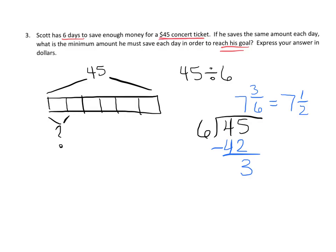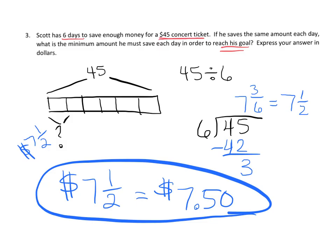So how much money does he need to earn each day or to save each day? He needs to save 7 and a half dollars. Well, 7 and a half dollars, we would more often write it like this, $7.50. But both of these are the right answer.